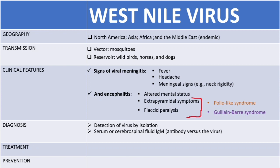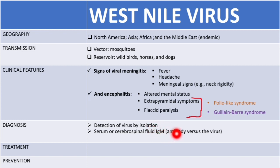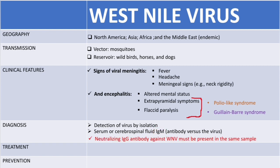If the IgM result is positive, we need to remember that IgM antibodies for the West Nile virus cross-react with those of dengue virus, yellow fever, and St. Louis encephalitis. Also, these antibodies can last for about a year — approximately 12 months after infection.